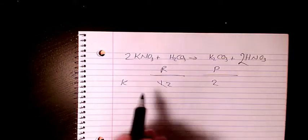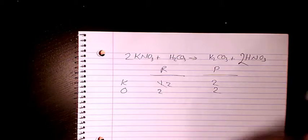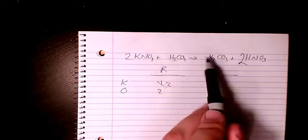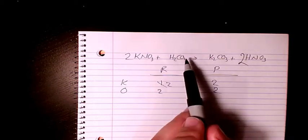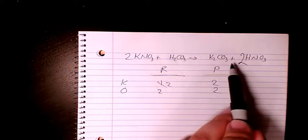So nitrogen and potassium are balanced. What about hydrogen? Let's check hydrogen. We have two in here and we have two in here, so that's balanced as well.